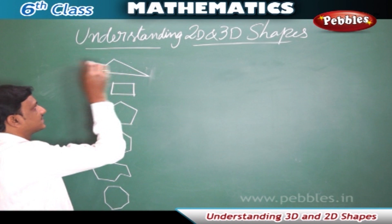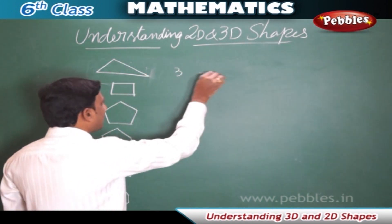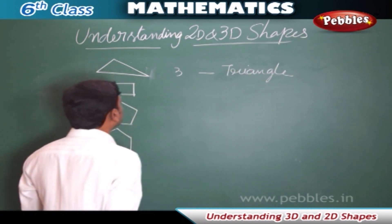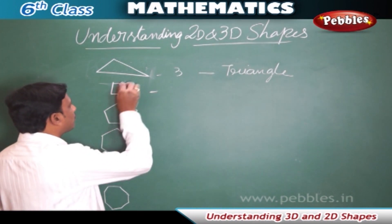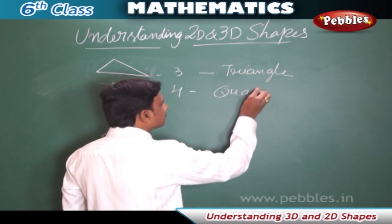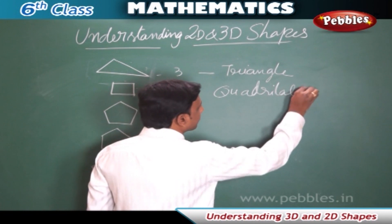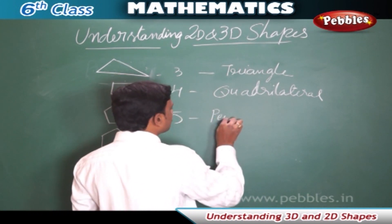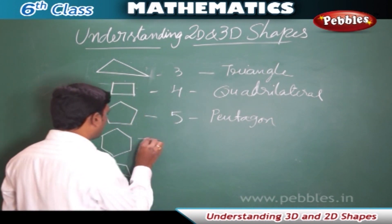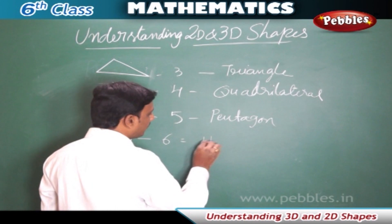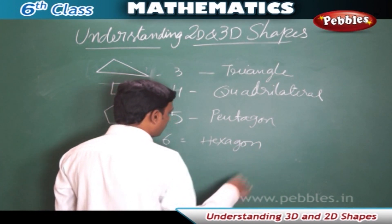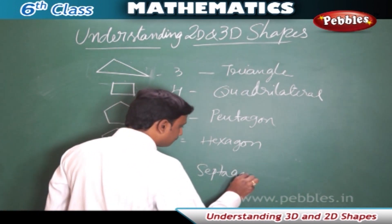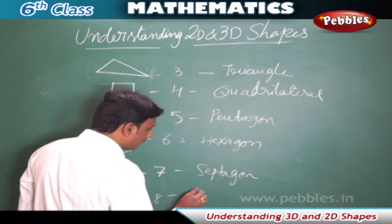A polygon with 3 sides is called a triangle. A polygon with 4 sides is called a quadrilateral. A polygon with 5 sides is called a pentagon. A polygon with 6 sides is called a hexagon. The polygon with 7 sides is called a heptagon, and the polygon with 8 sides is called an octagon.